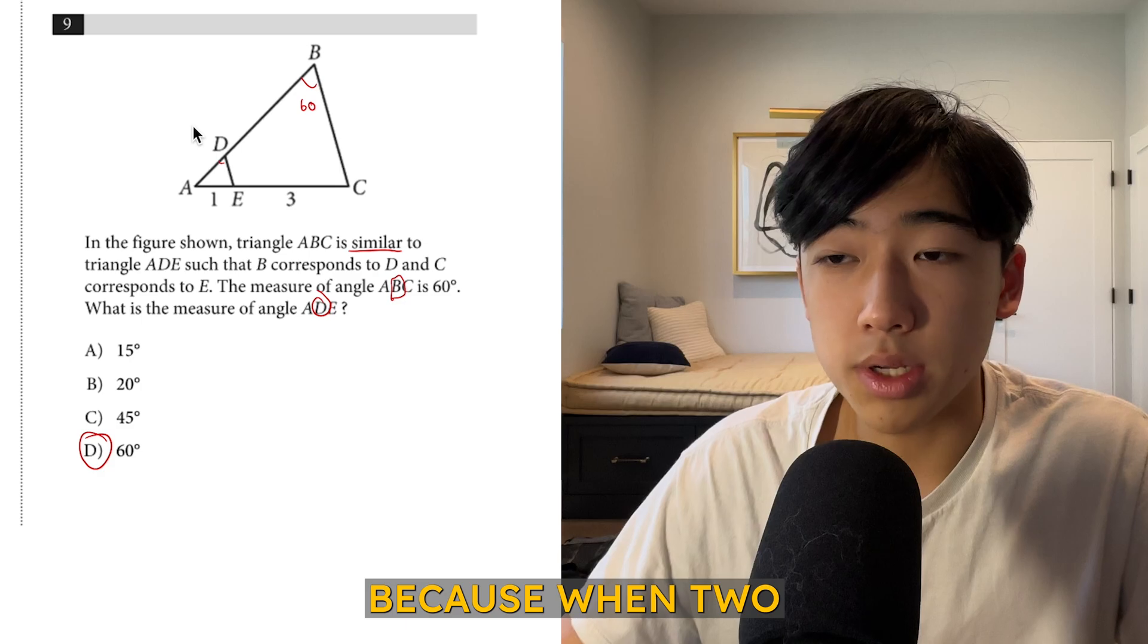Now for number nine, we're given that ABC are similar, and ADE is similar to ADE. So given angle B, we know what angle D is, because when two triangles are similar, then they have the same angle measures. So it's also 60 or D.